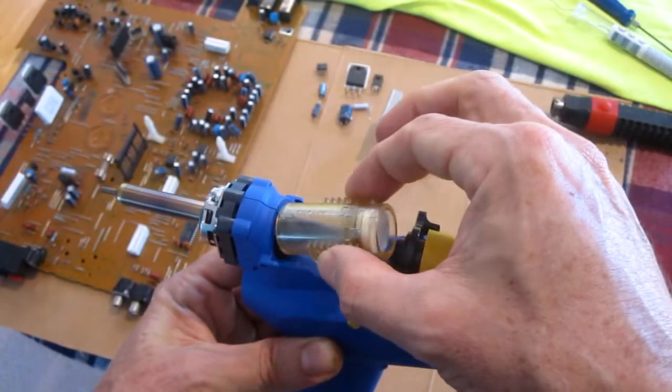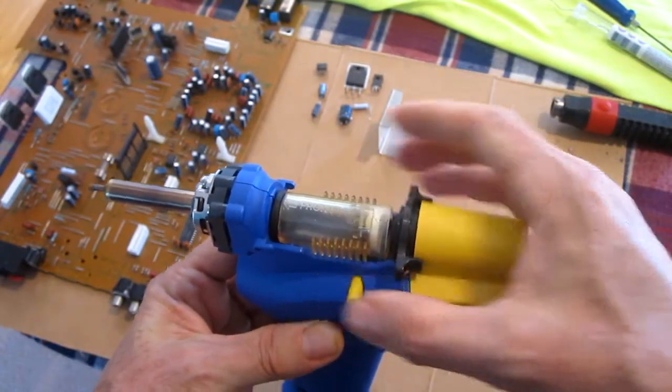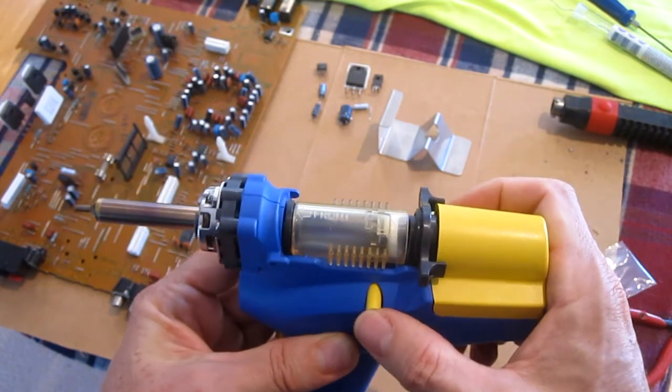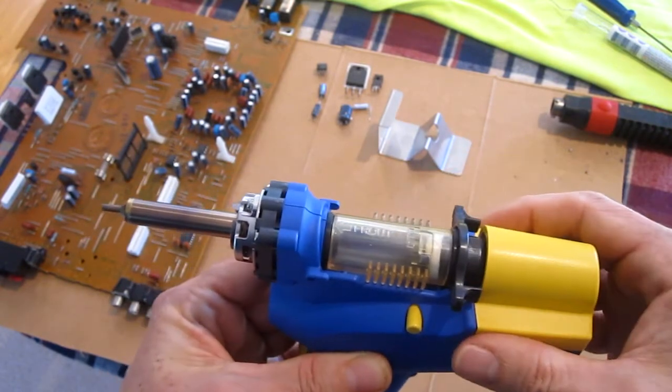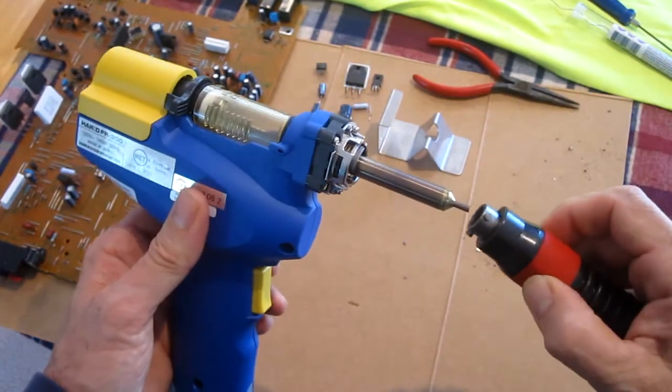Then you put the chamber back in. Hit this yellow release button and it locks it in place. Then I've reinstalled the tip.